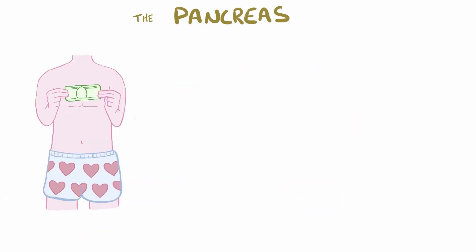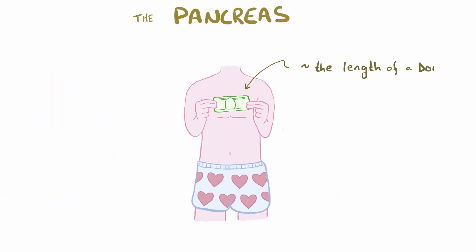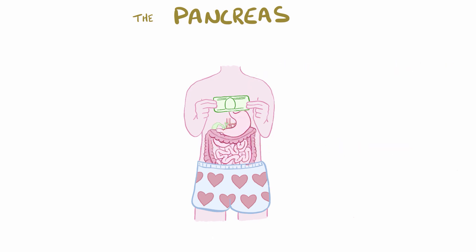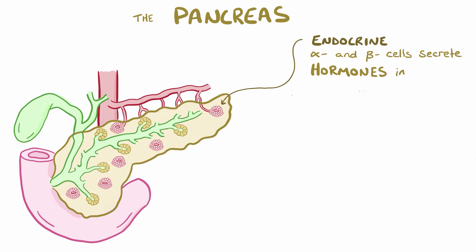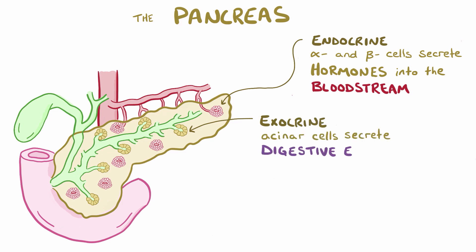The pancreas is a long, skinny gland the length of a dollar bill, located in the upper abdomen or epigastric region, behind the stomach. It plays endocrine roles—for example, alpha and beta cells make hormones like insulin and glucagon that are secreted into the bloodstream—but it also plays exocrine roles. For example, acinar cells make digestive enzymes that are secreted into the duodenum to help digest food.